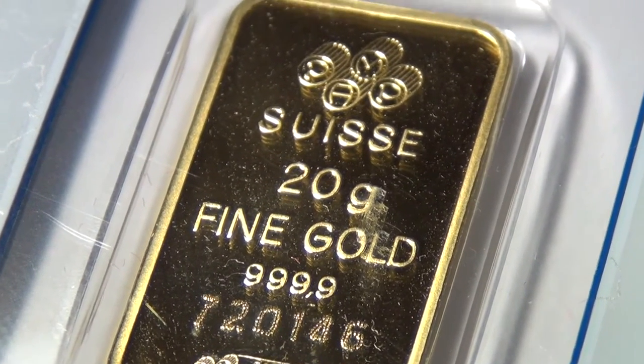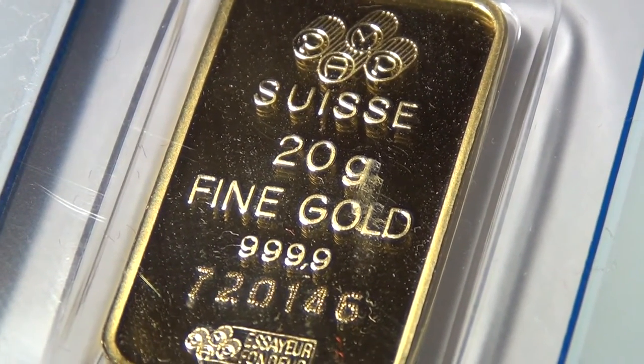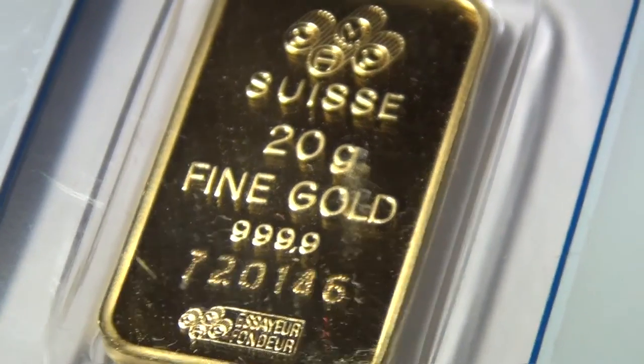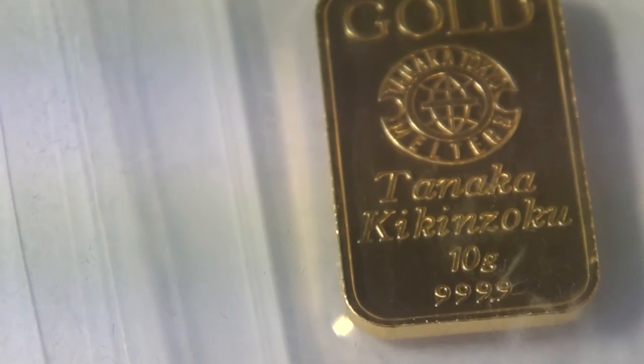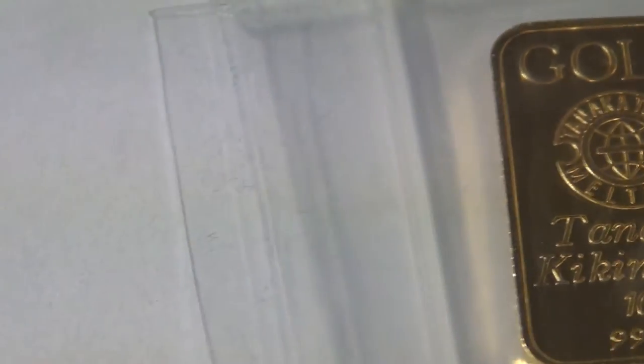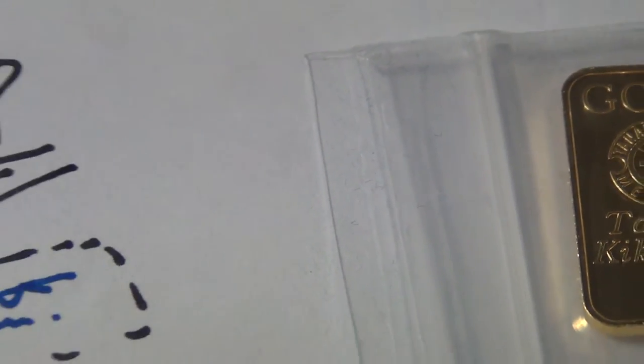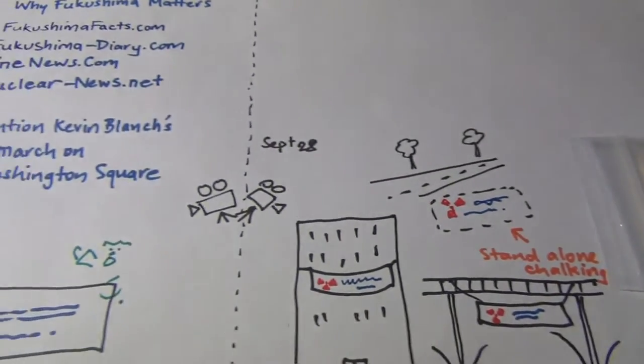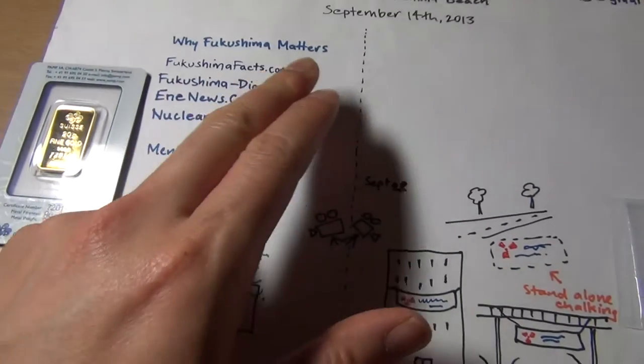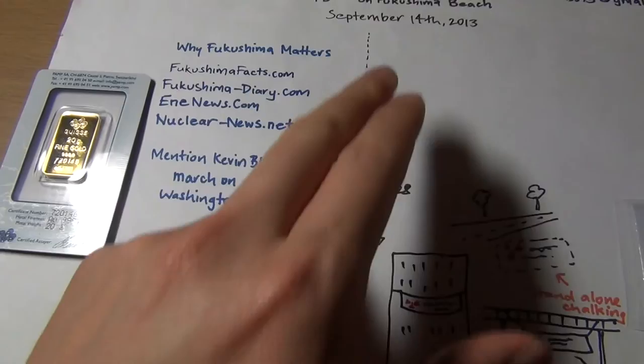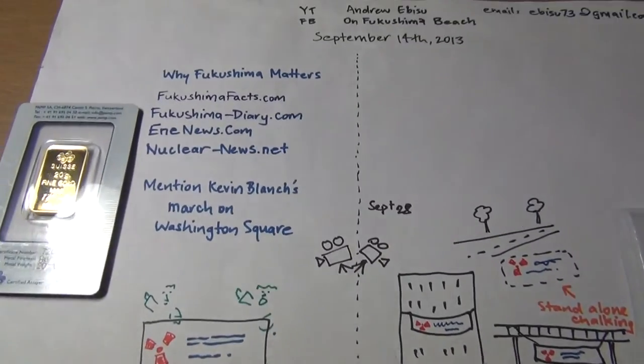So just one more time, explain how you can win this 20 gram gold bar and or this 10 gram gold bar. The contest is in two parts, symbolized by this black dotted line here down the middle.